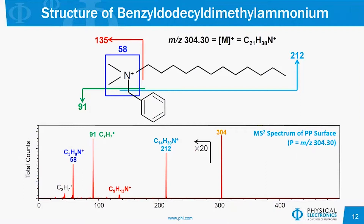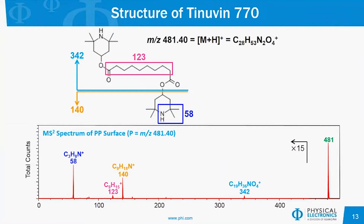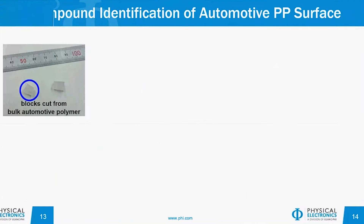We can take a look at that structure and make all of the compositional assignments for the product ion spectrum. We can continue that tandem MS reference library matching for all of the different peaks of interest on the sample. This is an example at a precursor mass-to-charge ratio of 481, which was matched to Tinuvin 770, and the compositional assignments also verify that.